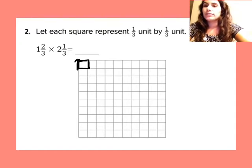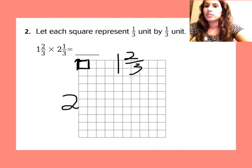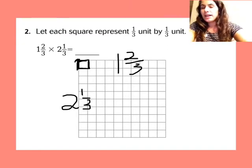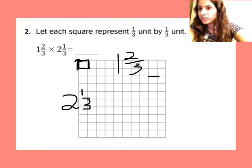I have to draw a figure that is one and two-thirds by two and one-thirds. I'm going to start with the top. I have to draw a line that is one and two-thirds long. Each little box is one-third.